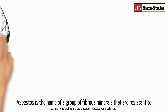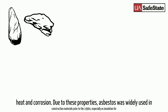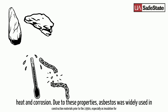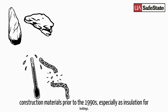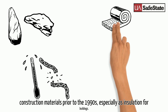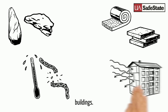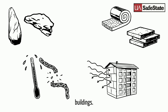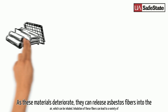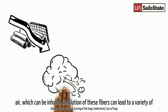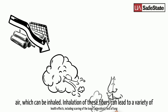Asbestos is the name of a group of fibrous minerals that are resistant to heat and corrosion. Due to these properties, asbestos was widely used in construction materials prior to the 1990s, especially as insulation for buildings. As these materials deteriorate, they can release asbestos fibers into the air, which can then be inhaled.